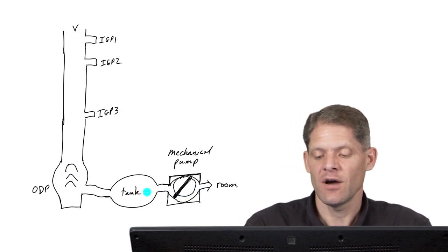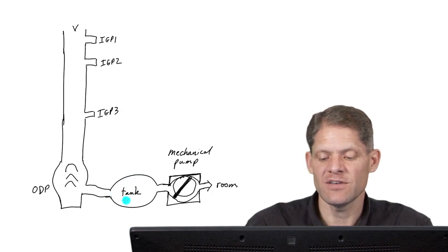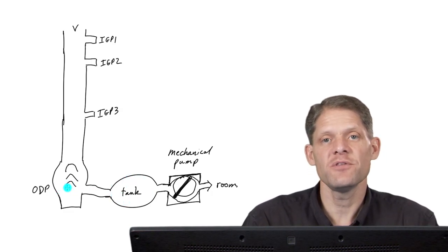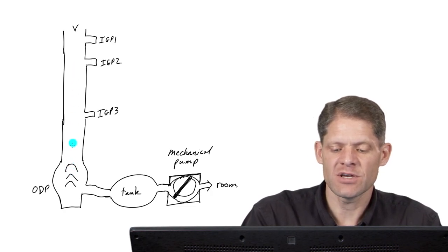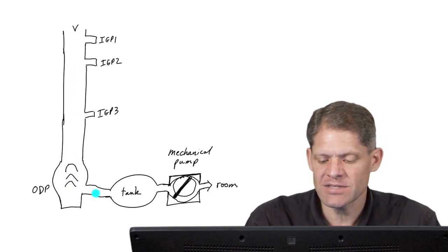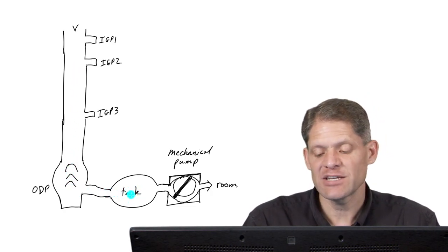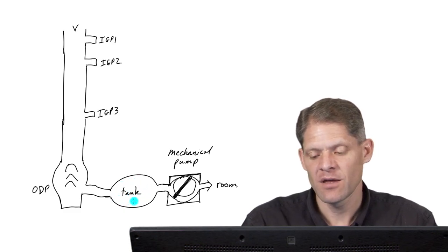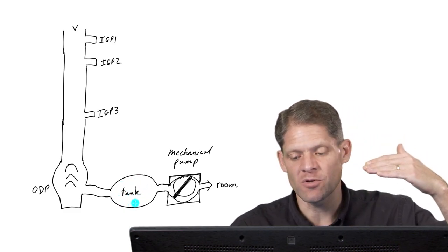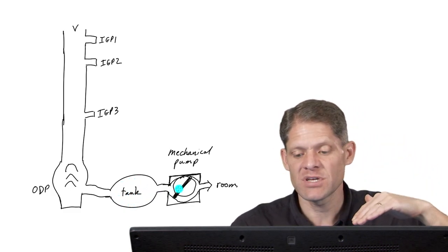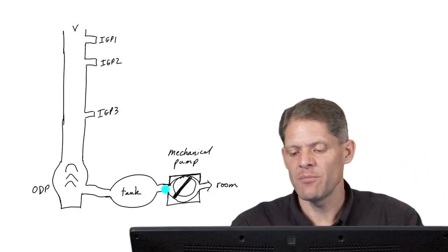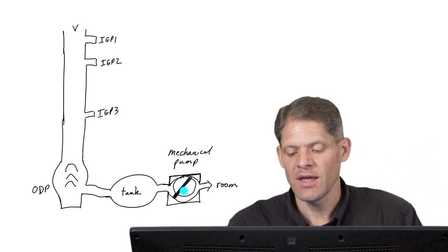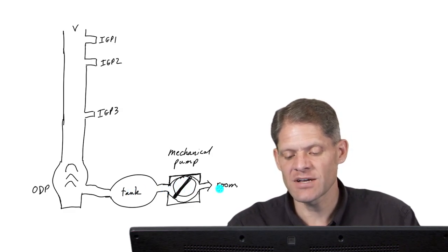Once it's achieved a strong vacuum in these regions, then the oil diffusion pump is turned on, and it further evacuates the column and pushing its exhaust into the tank. As pressure builds up in the tank, once it reaches a certain threshold where the mechanical pump will once again be effective, sensors sense that pressure, the mechanical pump turns on, it pumps down the tank and exhausts that into the room.